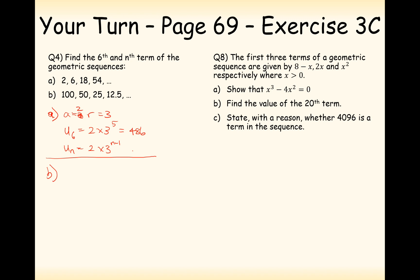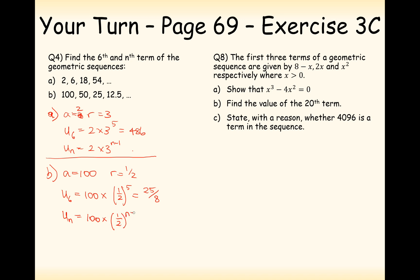For part b, we have a starting term of 100 and it looks like we are halving each time. The sixth term is 100 times a half to the power of 5 — always 1 less than the term we actually want — so 100 times 0.5 to the power of 5, which gives 25 over 8. And the nth term is 100 times 1 over 2 to the power of n minus 1.